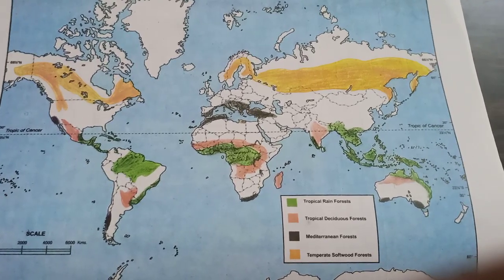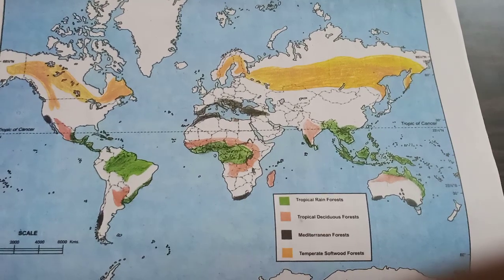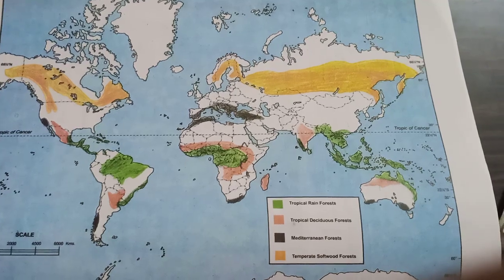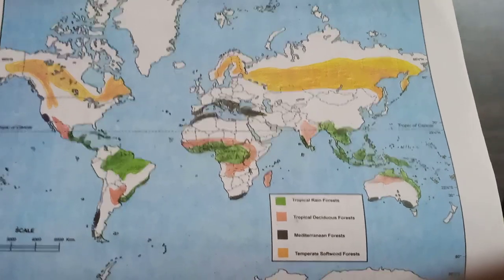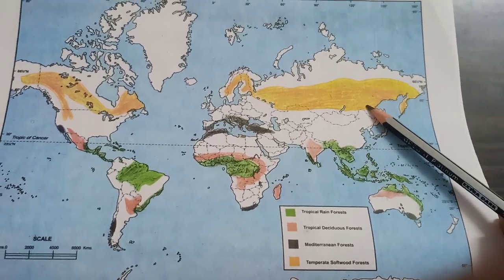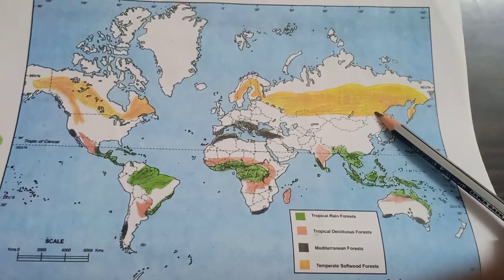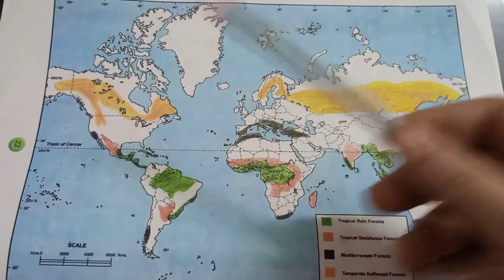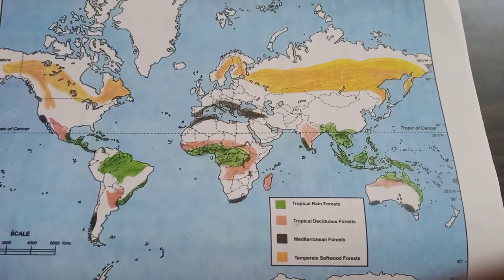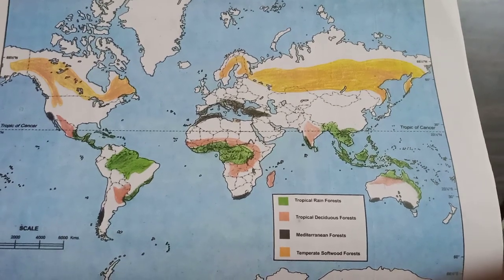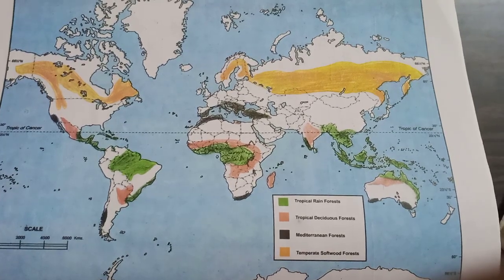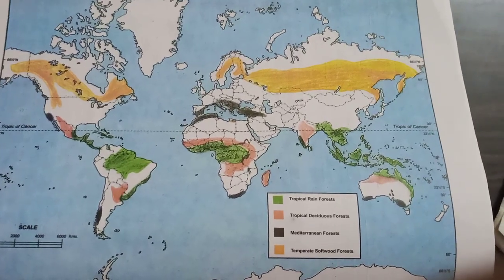Now let us move towards the temperate softwood forest, shown with the orange color. Softwood forests are also known as coniferous forests. They are found at higher latitudes of the Northern Hemisphere, on high mountains of Europe, Asia, northern Canada and the USA. I hope these regions are very clear to you. Please view this video again for better understanding. Thank you.